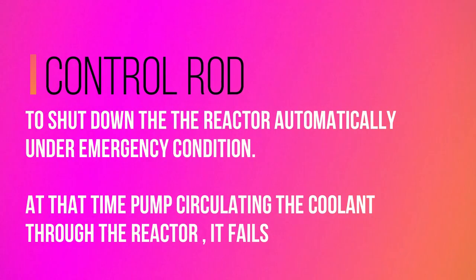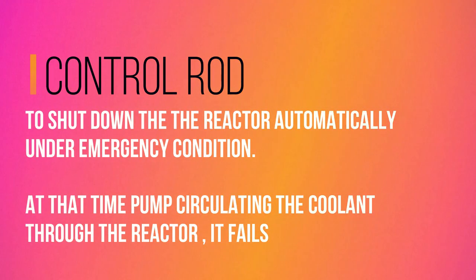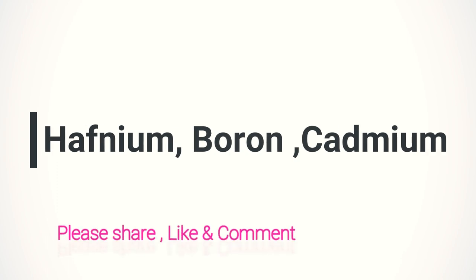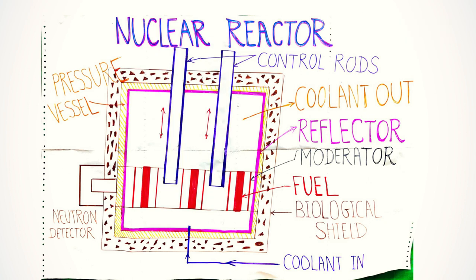To shut down the reactor automatically under emergency conditions, the pump circulating the heat transfer will be used. To control the power of nuclear reactor by absorbing neutrons, a control rod prevents neutrons from causing further fission.